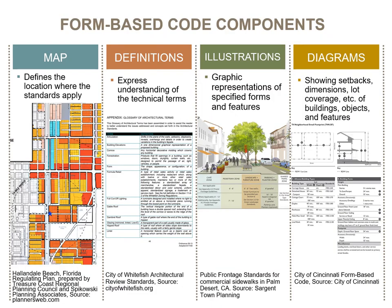The form-based code includes the regulating plan map, definitions to ensure technical terms are clear to the general public, graphics and illustrations to show what is intended, and diagrams that show dimensions, setbacks, and lot coverage for buildings — and details for the streetscape such as width of travel lanes, bike lanes, sidewalks, and landscaping standards.